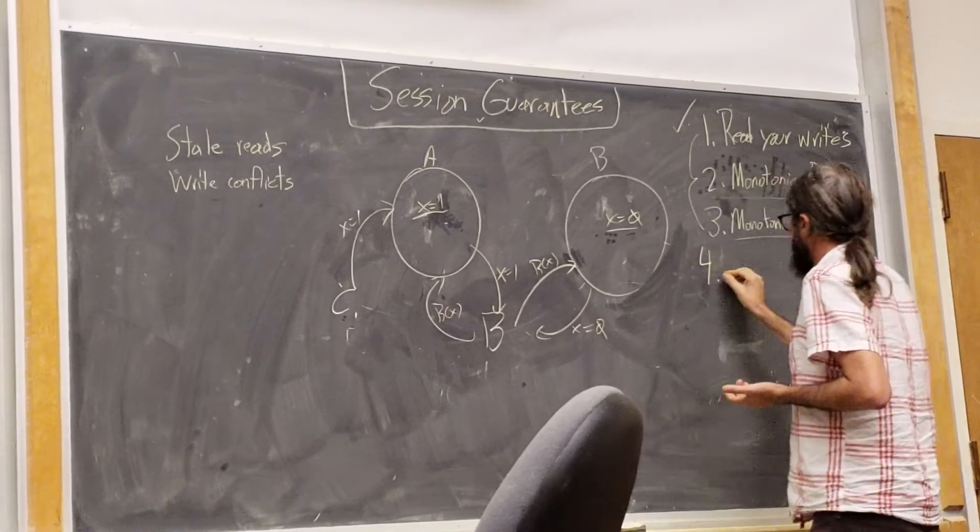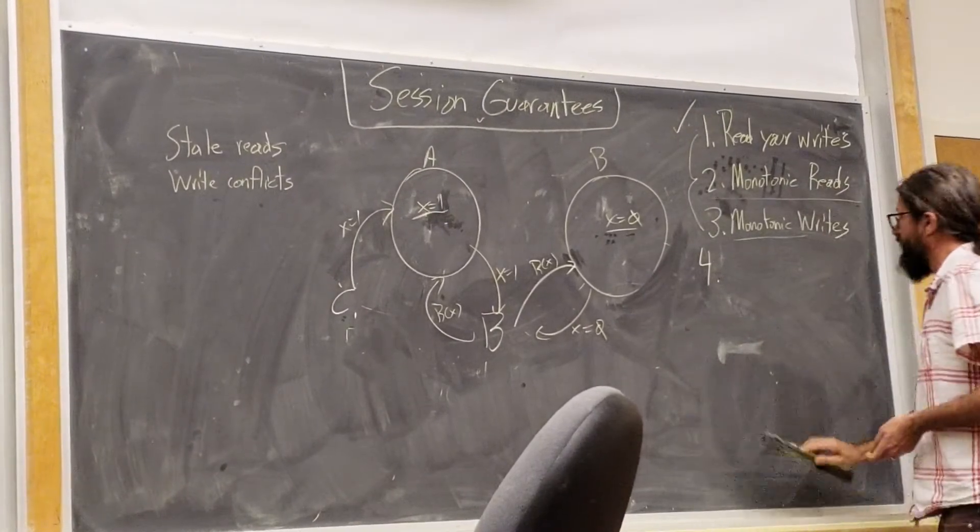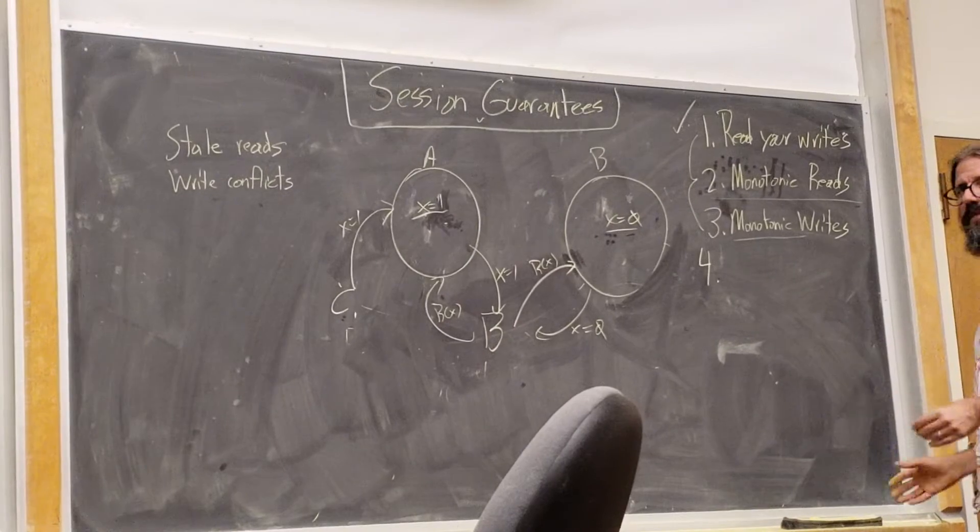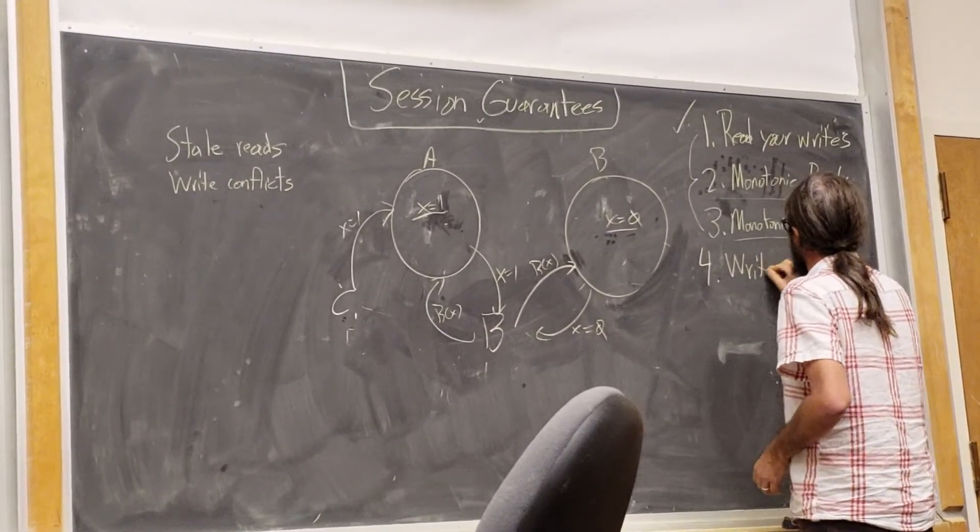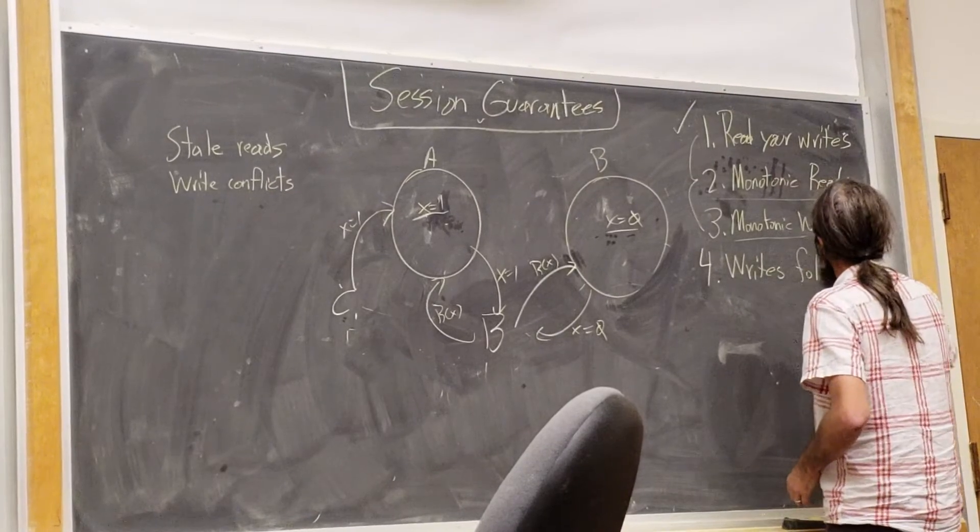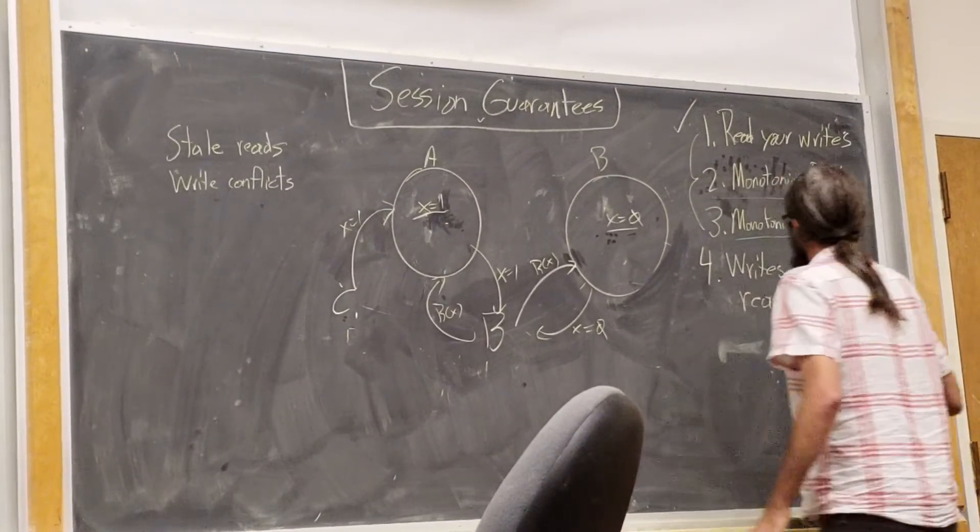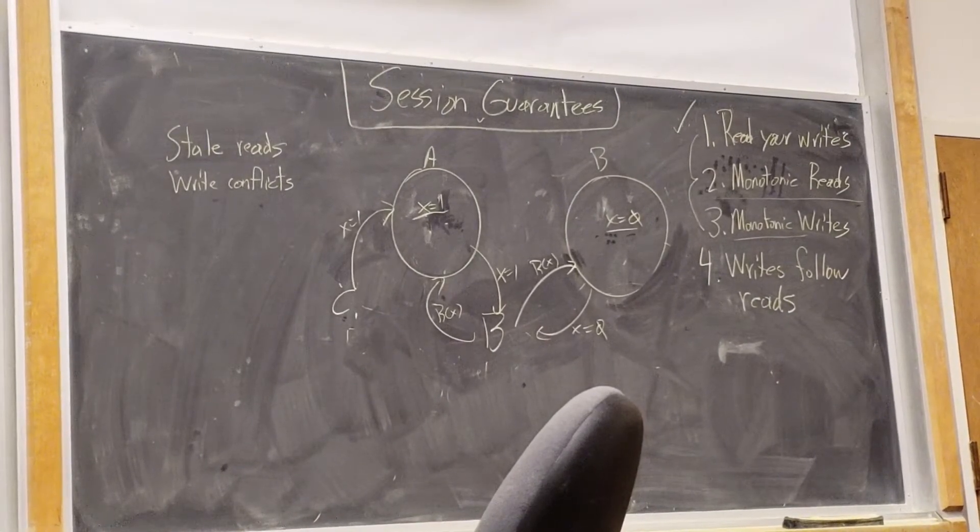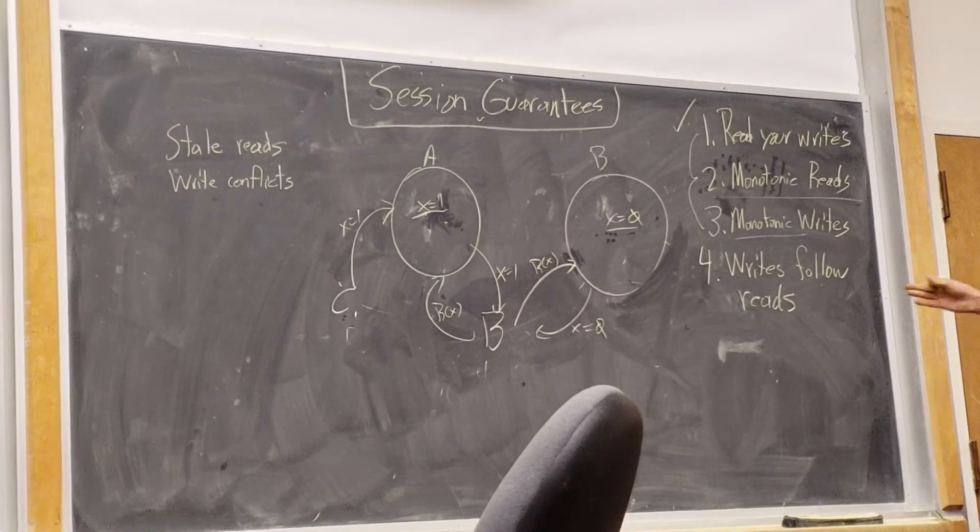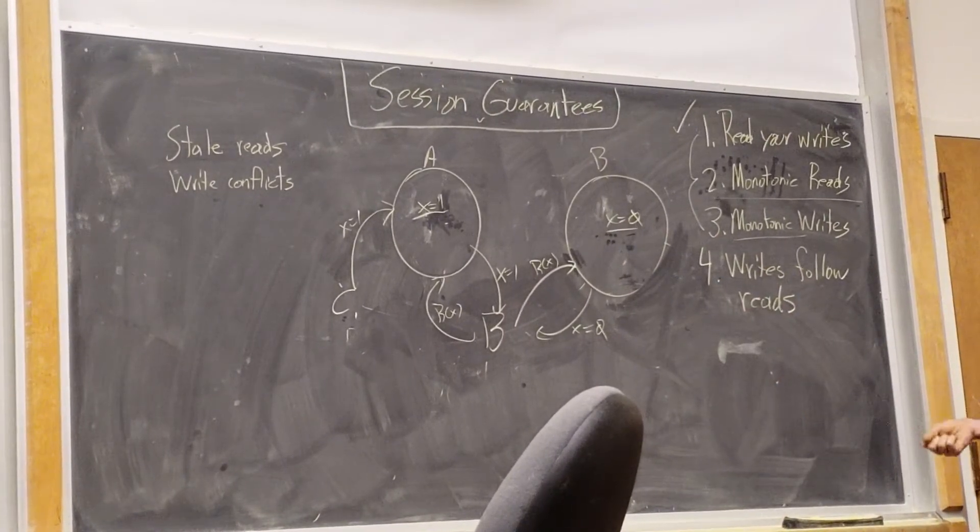There's one that's left, and maybe Lindsey can straighten me out on this, because I never really understood how this one wasn't just causal consistency. But it's called write follows reads. And so, from my perspective, saying like when you are thinking about the order in which writes get committed to a particular replica, they should be committed after the values that were read are visible.